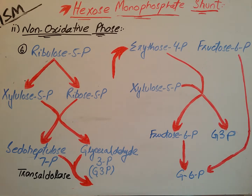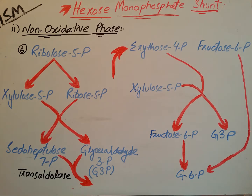Today we are going to discuss the second phase of hexose monophosphate shunt, that is the non-oxidative phase. In the previous lecture we discussed the oxidative phase, and the end product of the oxidative phase was six molecules of ribulose-5-phosphate, which enter into the non-oxidative phase. Here, ribulose-5-phosphate is converted into two molecules: xylulose-5-phosphate and ribose-5-phosphate, in the presence of two enzymes.